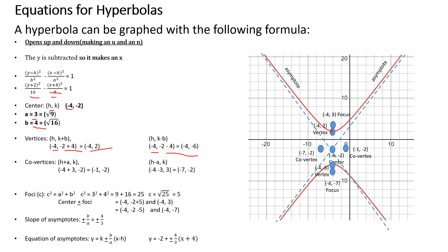The vertices are along the vertical (major) axis at (H, K plus B) and (H, K minus B). With H equal to negative 4, K equal to negative 2, and B equal to 4: one vertex is (negative 4, negative 2 plus 4) which is (negative 4, 2), and the other is (negative 4, negative 2 minus 4) which is (negative 4, negative 6). The co-vertices are at (H plus A, K) and (H minus A, K): (negative 4 plus 3, negative 2) equals (negative 1, negative 2), and (negative 4 minus 3, negative 2) equals (negative 7, negative 2).